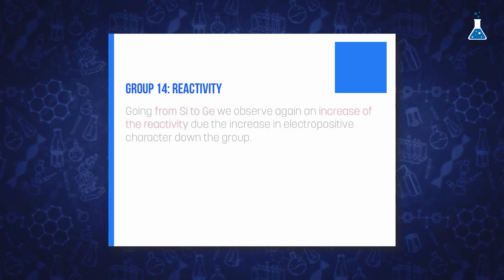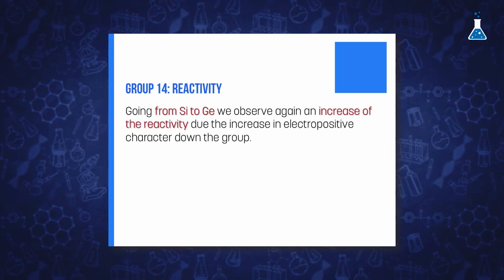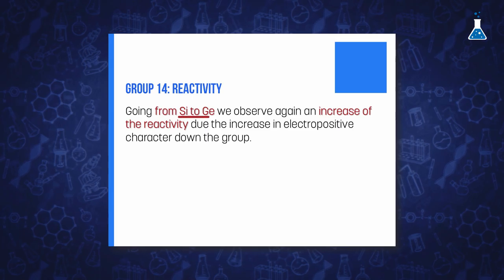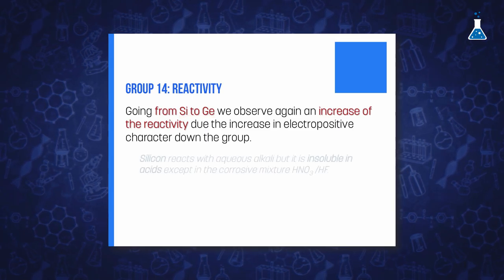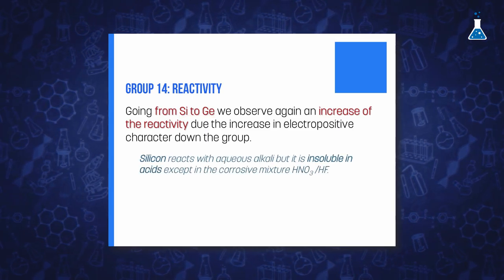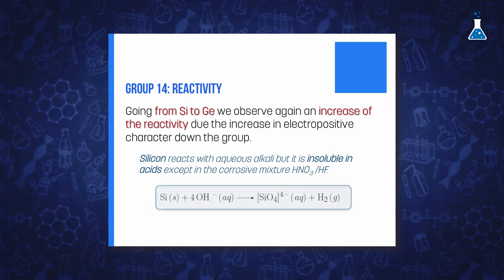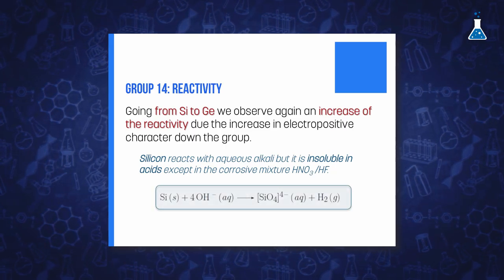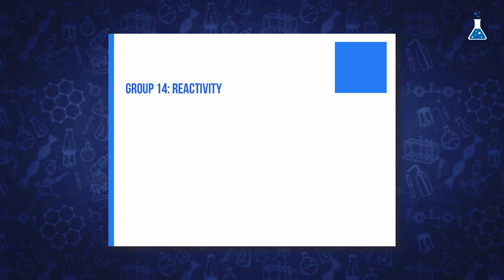The increase in reactivity is again evidenced when descending from silicon to germanium. While silicon reacts with aqueous alkali, liberating hydrogen, it is insoluble in nitric acid and hydrofluoric acid.